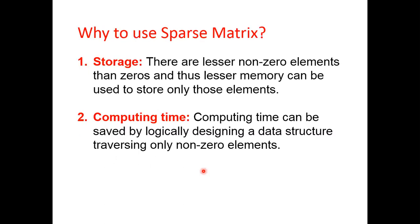So why do we use sparse matrices? There are two advantages. First is storage and second is computing time. If you ignore zeros, you just need to store the non-zero elements. There are fewer non-zero elements than zeros, so lesser memory can be used. We store only non-zero elements along with their row and column indexes, and other indexes are automatically treated as zero.